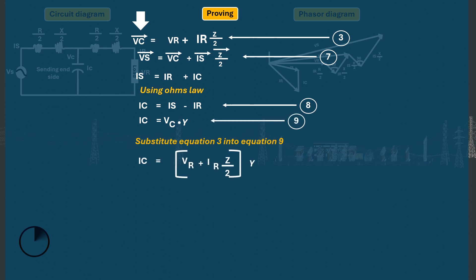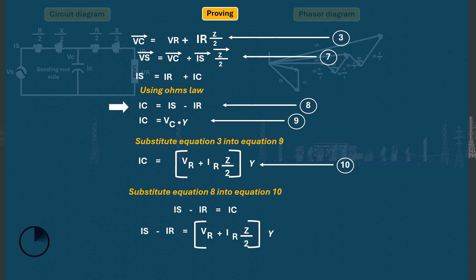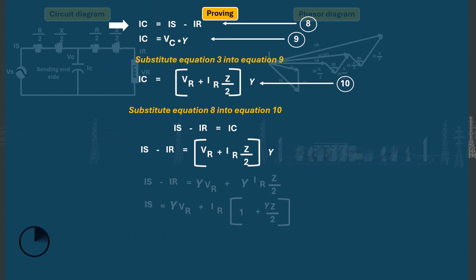We can further manipulate IC by substituting equation 3 into equation 9. The current IC equals open bracket VR plus IR multiplied by Z over 2 close bracket, multiplied by Y, the admittance (equation 10). Substituting equation 8 into equation 10: IS minus IR equals open bracket VR plus IR multiplied by Z over 2 close bracket multiplied by Y. Expanding and simplifying gives equation 11 for the sending end current IS.